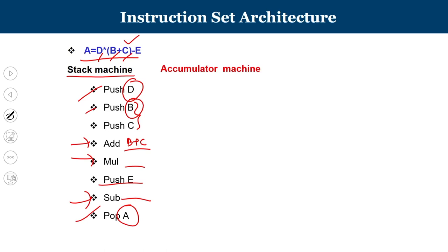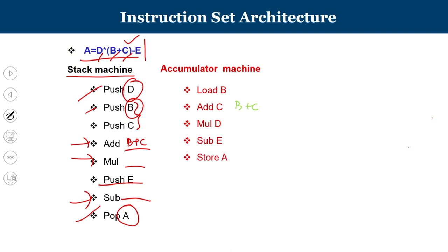For the same high-level statement in accumulator architecture: load B (into accumulator), add C (accumulator now holds B+C), multiply D (result is D*(B+C) in accumulator), subtract E (accumulator now holds D*(B+C)-E), then store result to A. The number of instructions is drastically reduced compared to the stack architecture because we can perform operations with just load, add, multiply, and subtract.